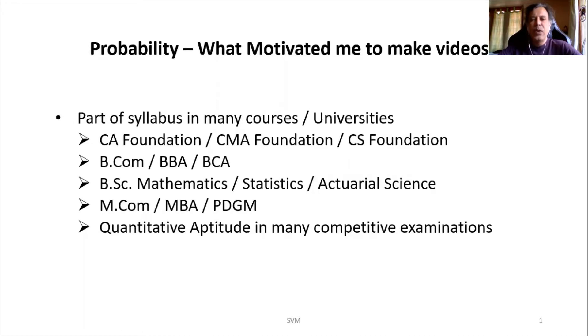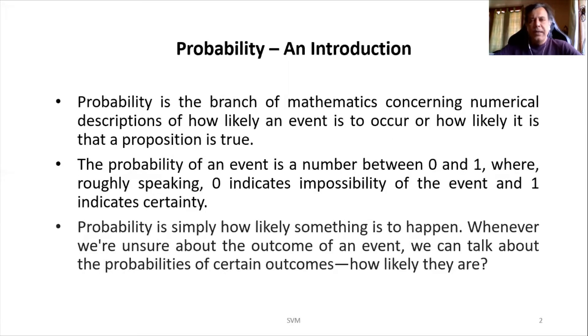Now let us move on to the topic which is probability. What exactly does probability mean? It's a branch of mathematics which concerns numerical descriptions of occurrence of an event. Generally, when you write the chance of occurrence in terms of numericals, the number will range from 0 to 1.